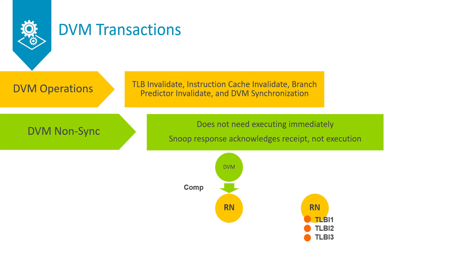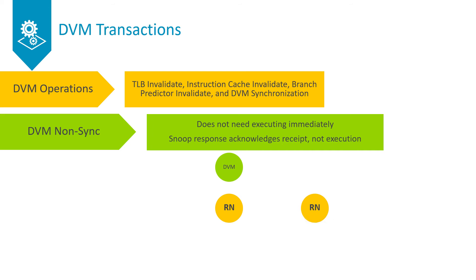To ensure that all outstanding DVM requests are executed, an RNF issues a synchronisation DVM operation, also known as a DVM sync. The DVM sync cannot be issued until all completion responses for prior DVM messages have been received. When a request node receives a DVM sync on its snoop channel, it does not issue a response until all prior DVM operations have been executed. Therefore, the completion response from the DVM node for a DVM sync guarantees that all prior DVM operations have been executed.